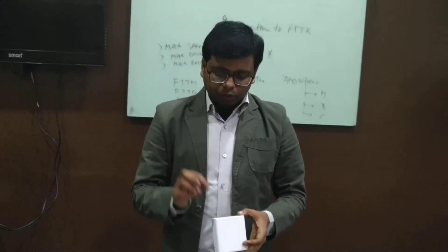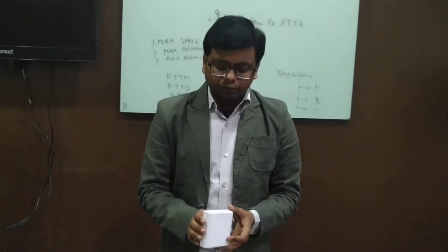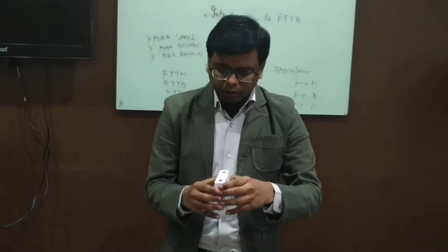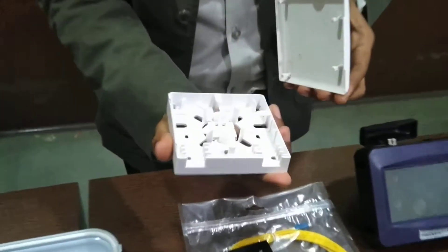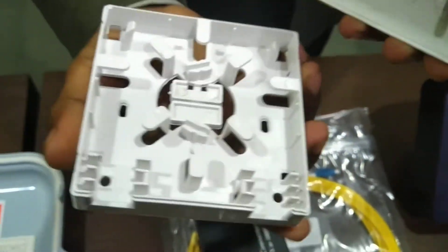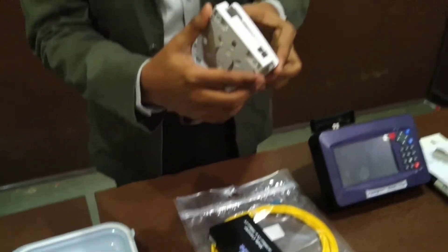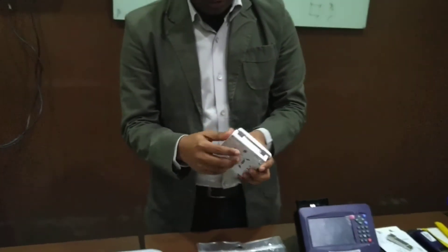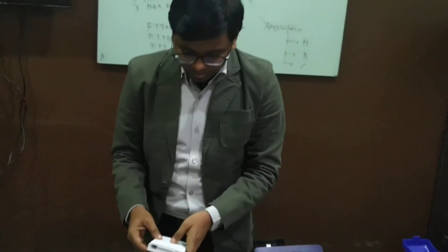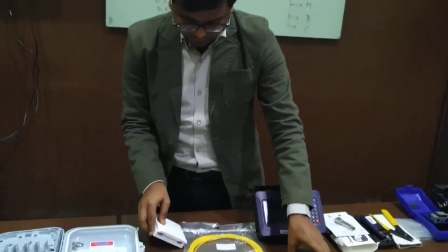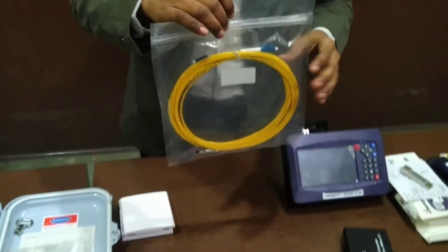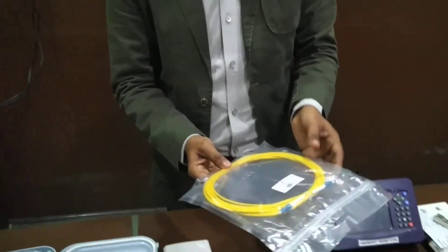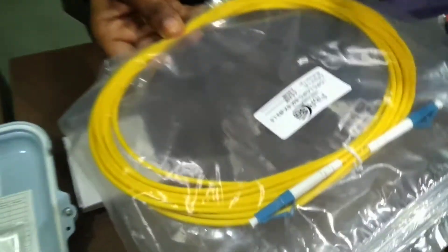I could not put my fiber optic directly into the devices, so I need one more component known as a small home unit. This is a very micro version of a splitter. We put the fiber coming from the back and side, and we have one more fiber which we connect to our home.